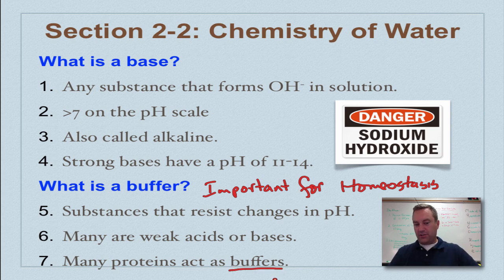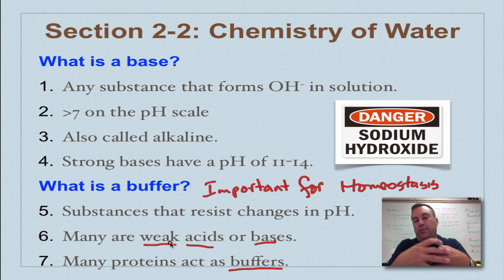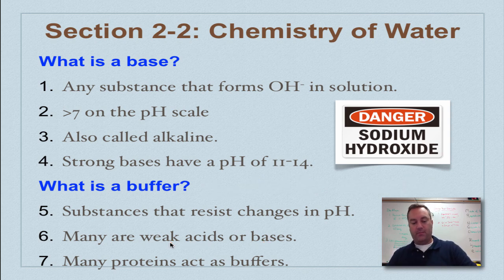Now, a lot of buffers that you're going to find out there are usually very weak acids or very weak bases. And what these guys will do is they'll absorb, like if you're a weak acid, somebody throws in a base, you're going to be able to absorb those hydroxide ions. And the bases on the opposite end are going to be able to absorb the hydrogen ions and your pH isn't going to fluctuate very at all. So these guys are really, really important for homeostasis.